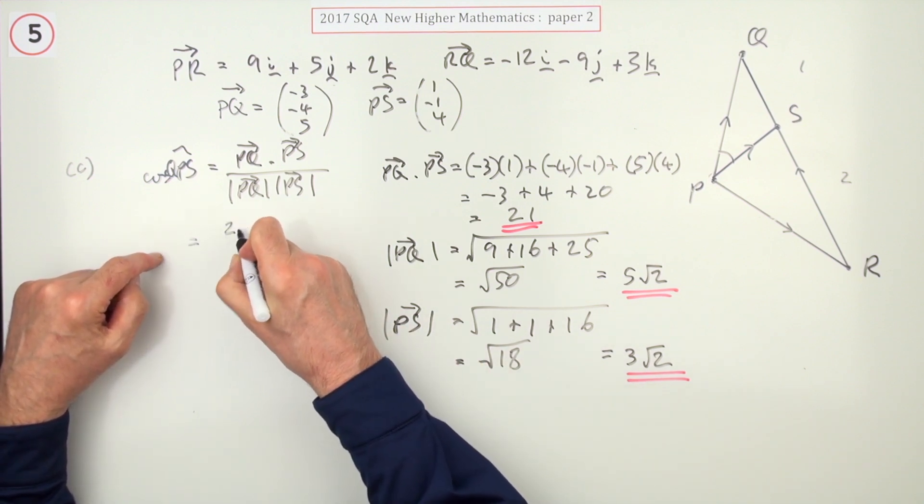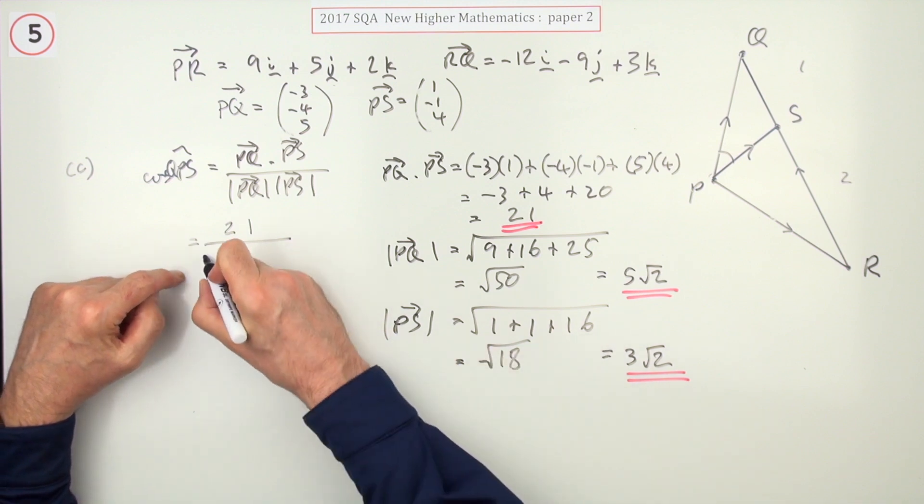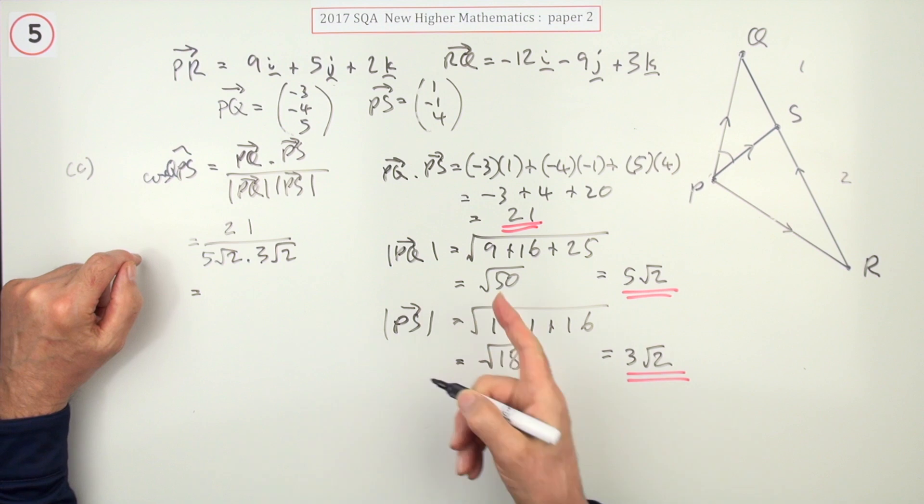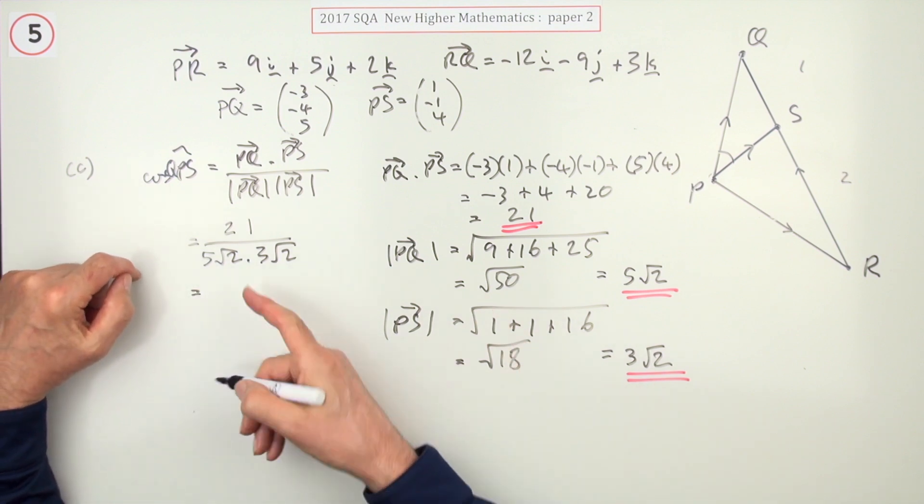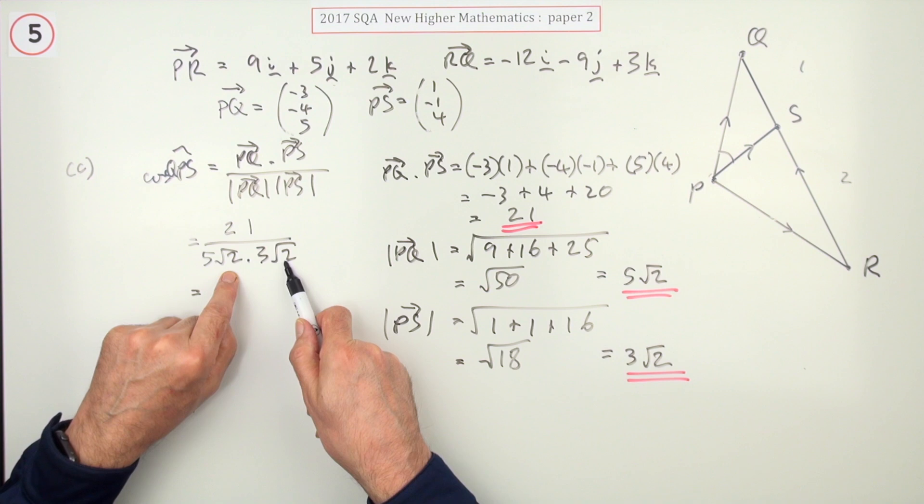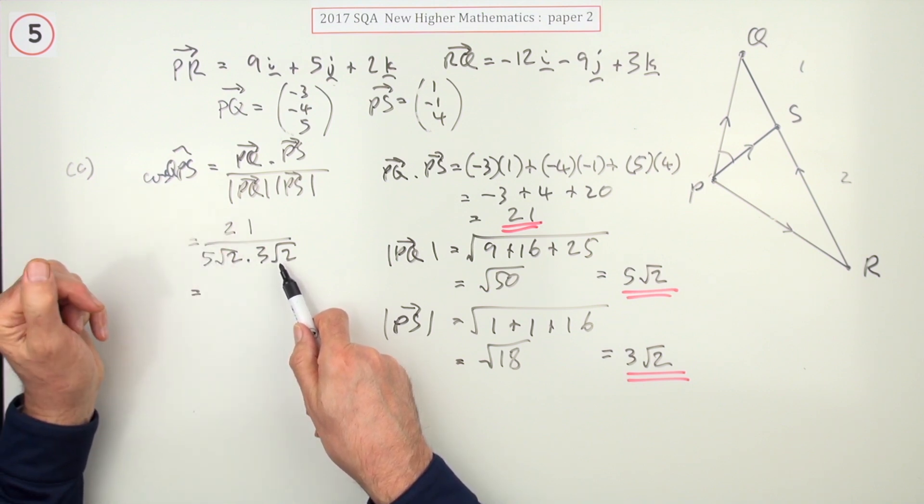That would be 21 over, if I put those in, 5 root 2 times 3 root 2. But I don't see what's wrong with just putting in root 50 times root 18, because as soon as I do that I'm forced to tidy it up. Root 2 times root 2 is 2, 2 times 5 are 10, 10 times 3 are 30, so it's 21 over 30.